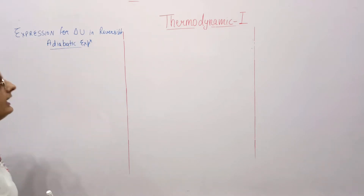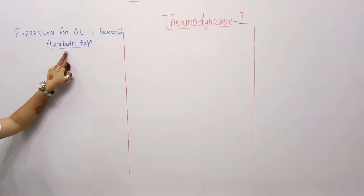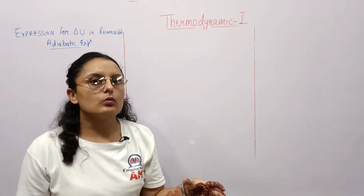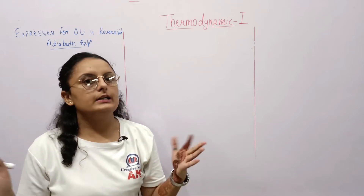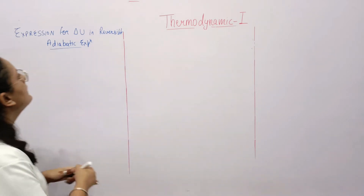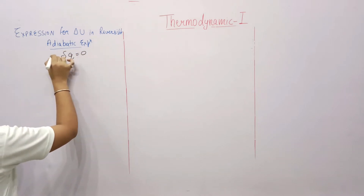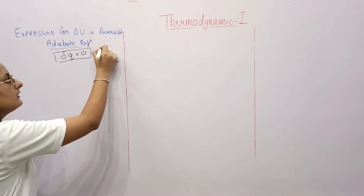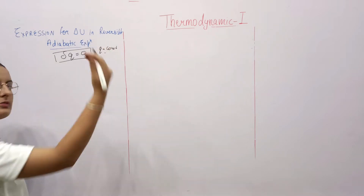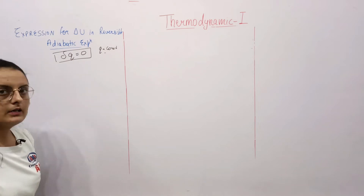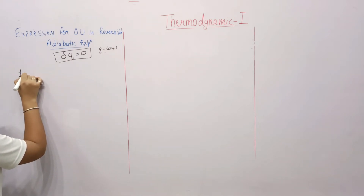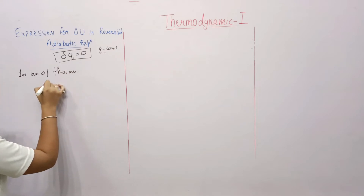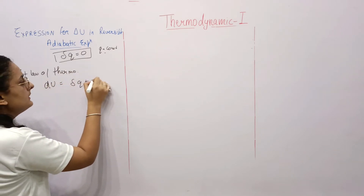First we will find delta U. The condition given is adiabatic expansion. Adiabatic means the heat of the system remains constant, which means del q equals zero — there will be no change in heat. Now applying the first law of thermodynamics: dU = dq + W.